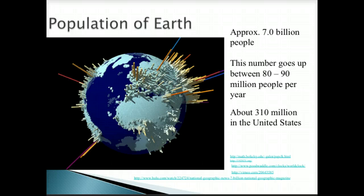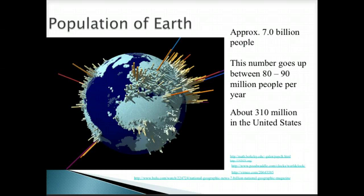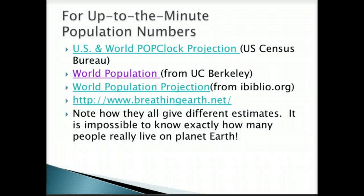Looking at the Earth's population, right now there's about 7 billion people on the Earth. That's a number bigger than we can possibly fathom, but if you think about the fact that it's also growing by 80 to 90 million people per year, it's a pretty staggering thing to wrap your mind around. In the United States alone, we have over 300 million, and obviously it's difficult to count exactly how many people there are throughout the world, but between the various resources we can look at, there are pretty accurate figures.